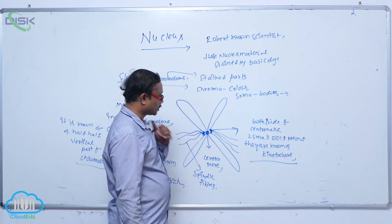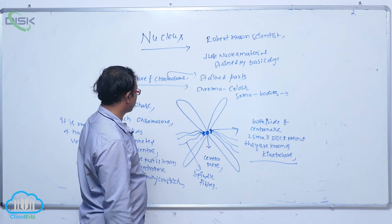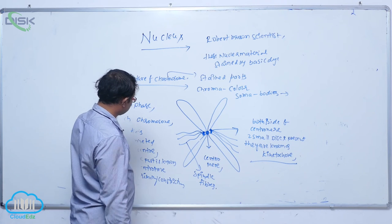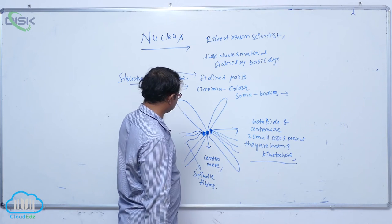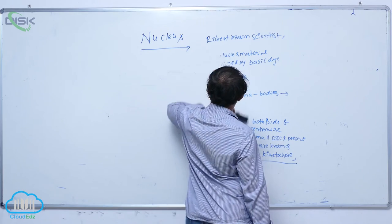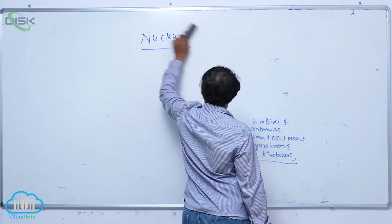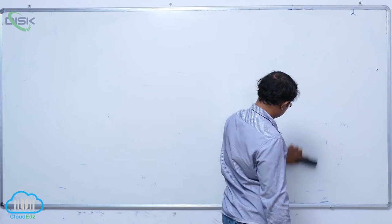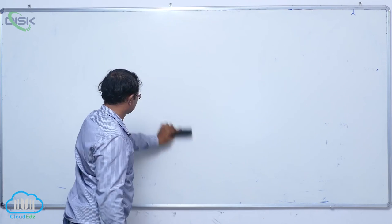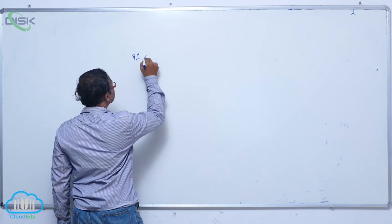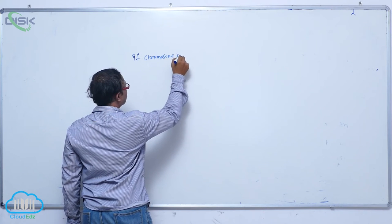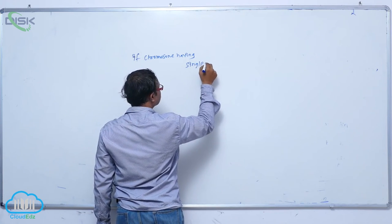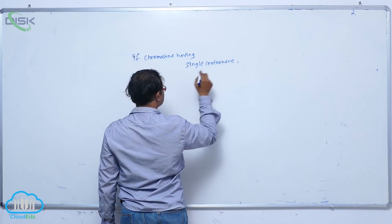That is the structure of the chromosome. Based on the centromere, if a chromosome has only a single centromere, it is known as a monocentric chromosome.